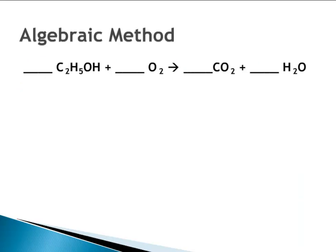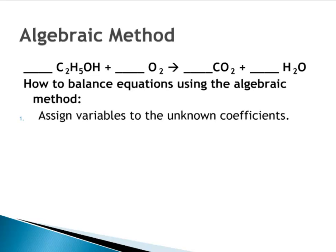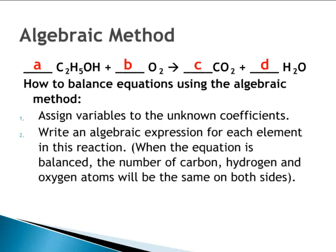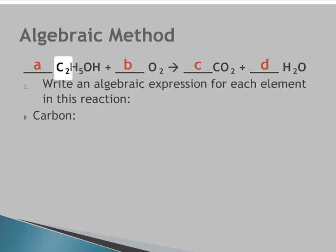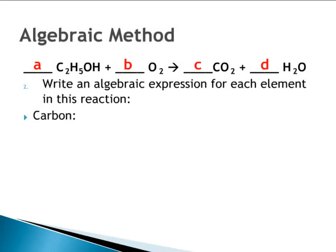Let's try another example. First, we add variables A, B, C, and D to the unknown coefficients. Writing algebraic expressions for each element, starting with carbon: there are two carbons in C2H5OH, giving 2A, and one carbon in carbon dioxide, giving C. So 2A equals C.